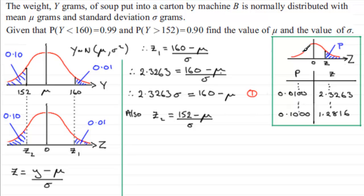But, remember, this is on the other side of 0. It's on the negative side. And so, by symmetry, we know that, therefore, Z2 will be minus 1.2816. So, take care there, minus 1.2816. And that's going to be equal to 152 then minus the mean mu all divided by sigma. And, again, I'm going to multiply both sides by sigma. And so, therefore, I get minus 1.2816 sigma equals 152 minus mu. And I'll call that equation 2.